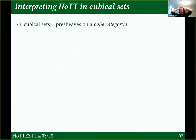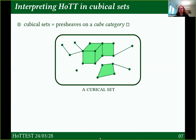Let's start with interpreting homotopy type theory in cubical sets. Cubical sets are going to be presheaves on something I'll call a cube category. I won't define precisely what counts as a cube category, but it's some kind of category where the objects are cubes and morphisms are maps between cubes. A cubical set might look like: some points, some lines, some squares, maybe a cube — glued together in some way. The choice of cube category determines what structure is inherent in a cube.